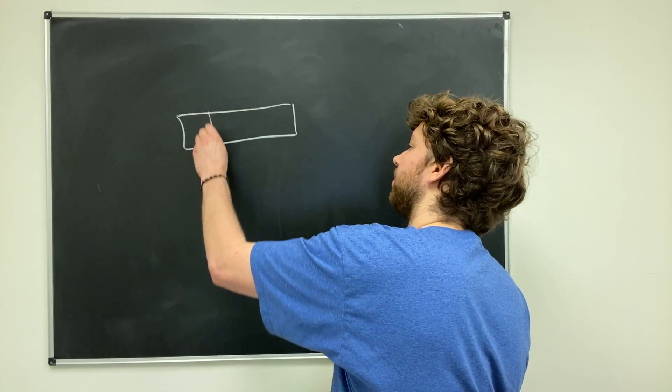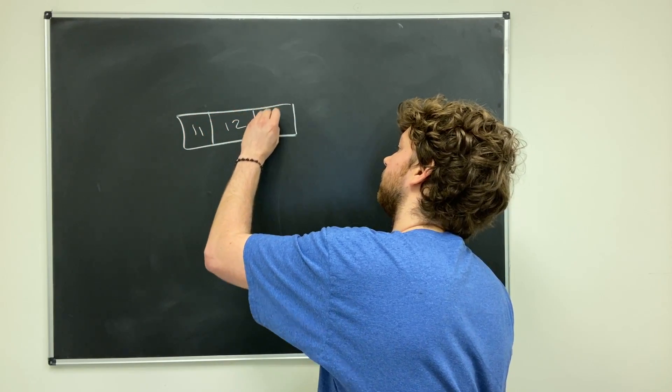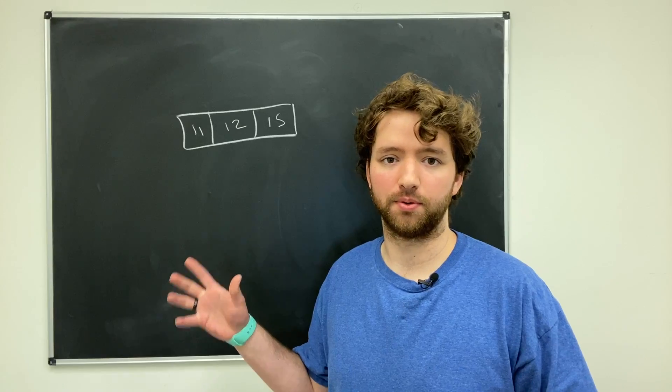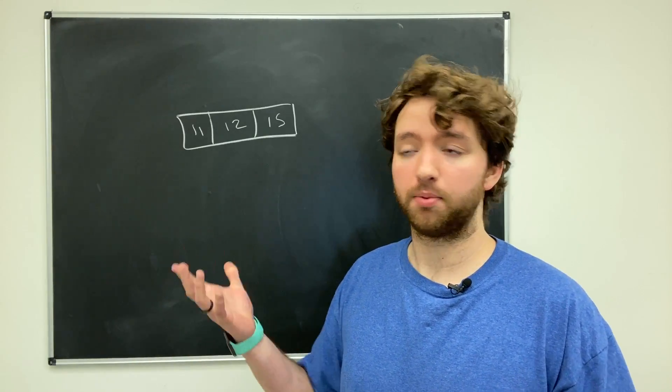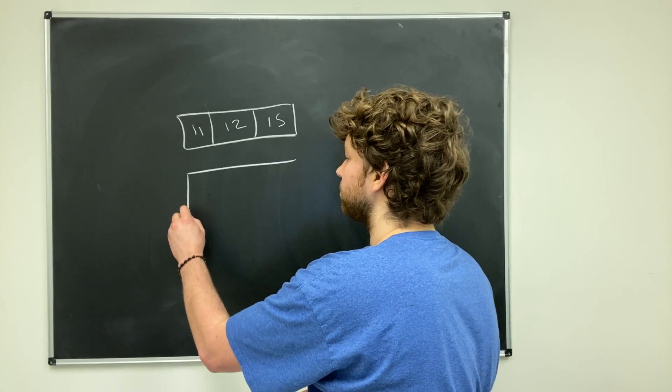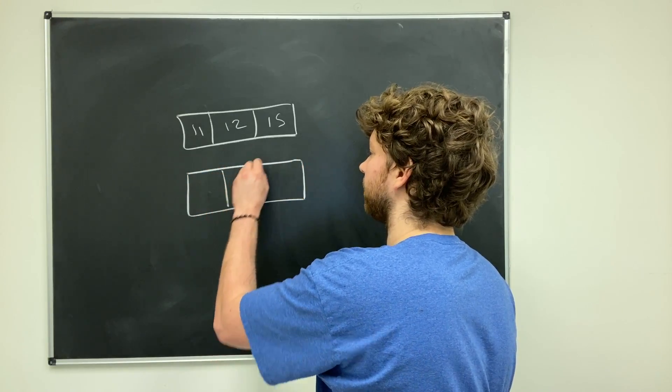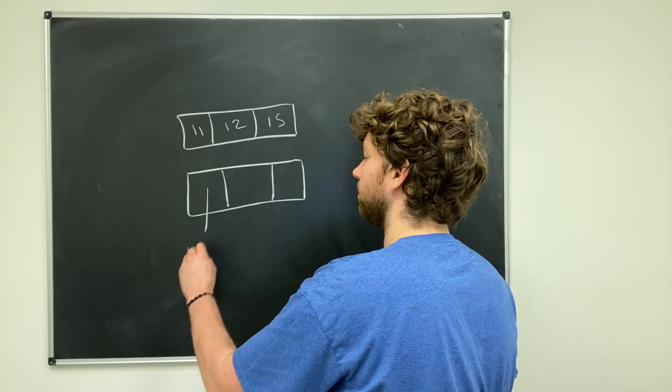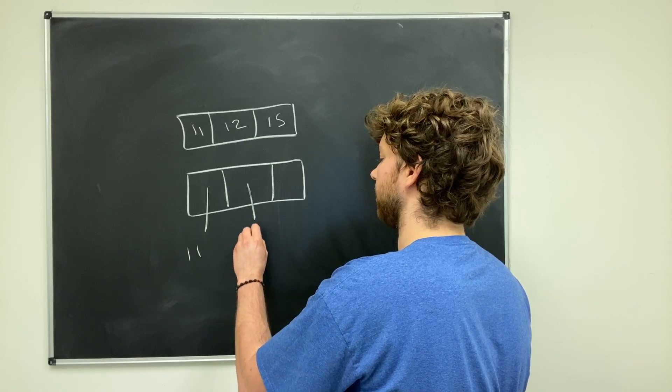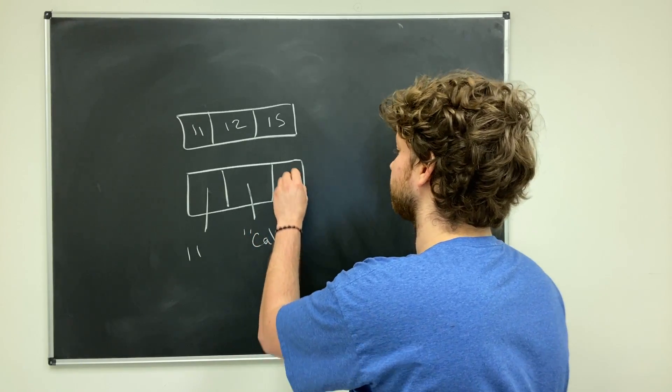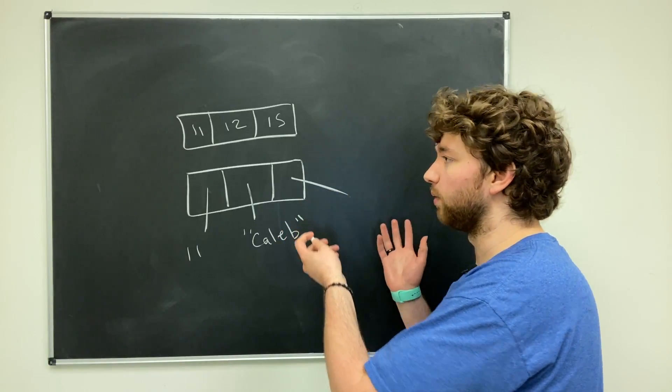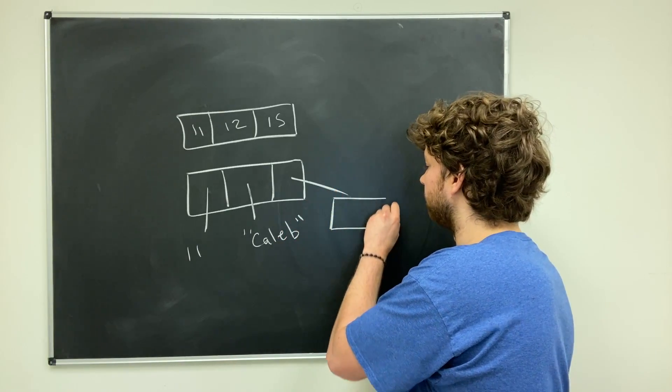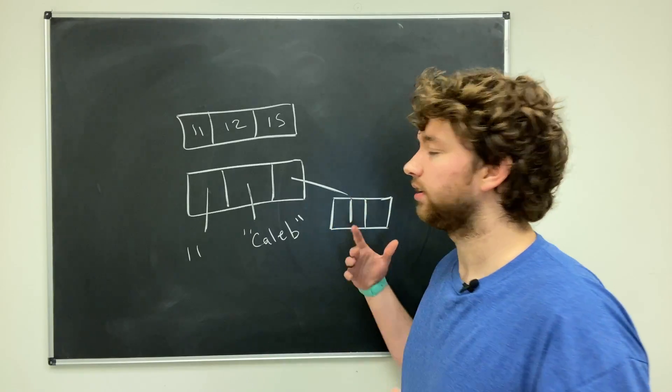Maybe another solution would actually be to have an array of pointers. Then in that situation we could have different types. This one might point to a number, this one might point to a string such as Caleb, this one might point to some enumeration value or another array. This could be another array over here.